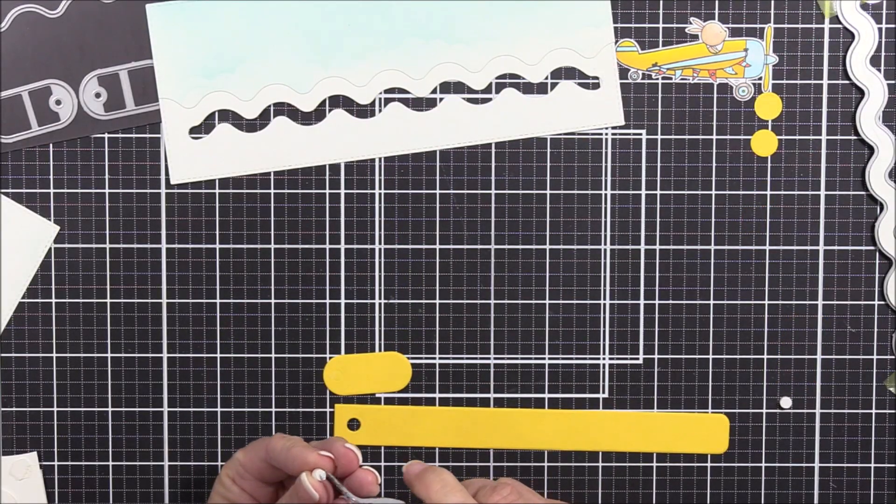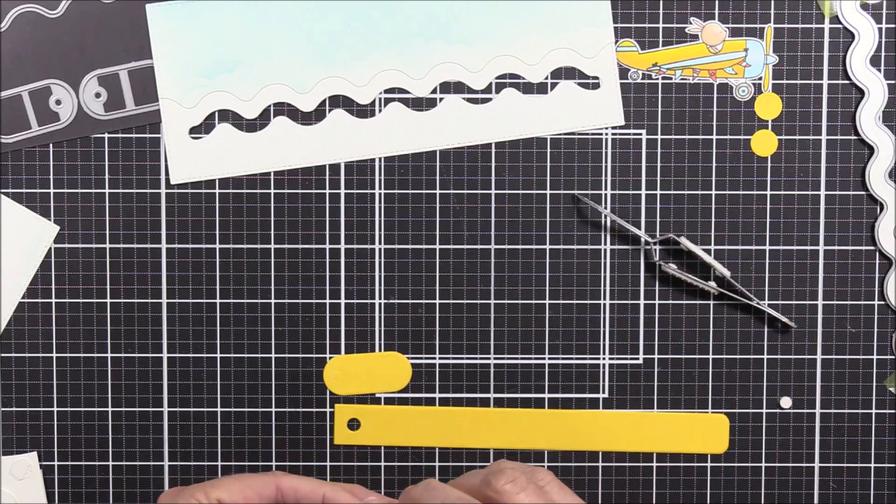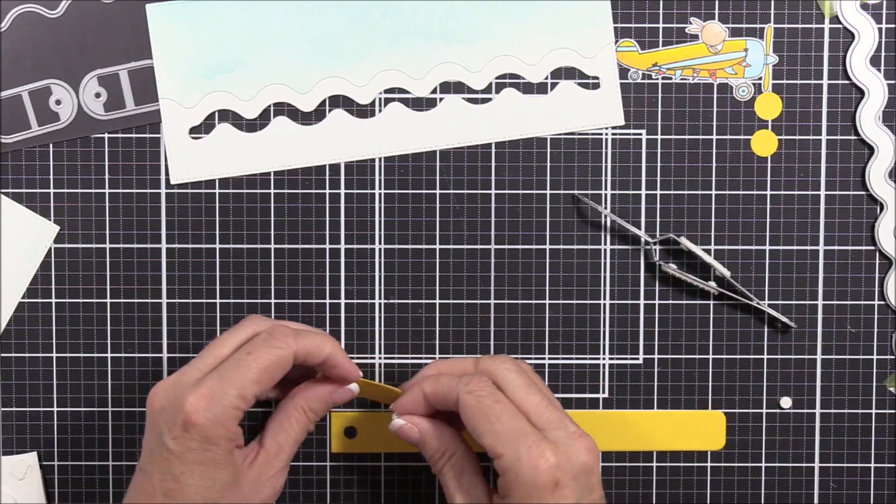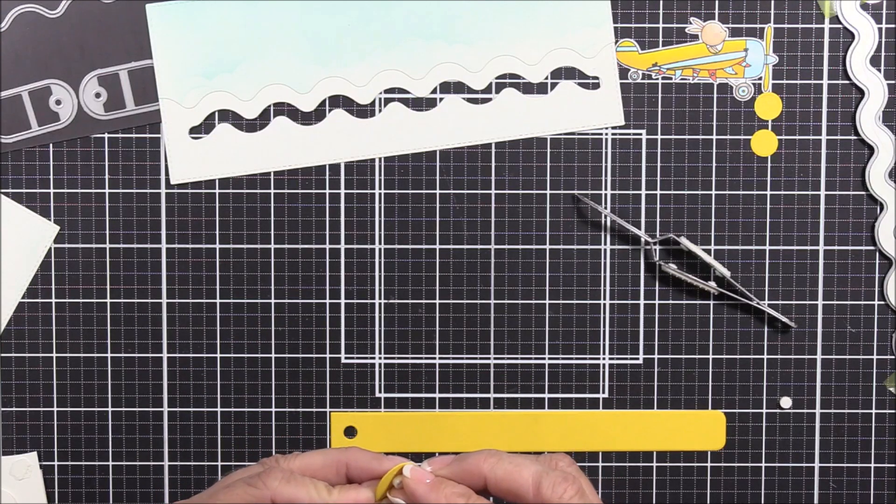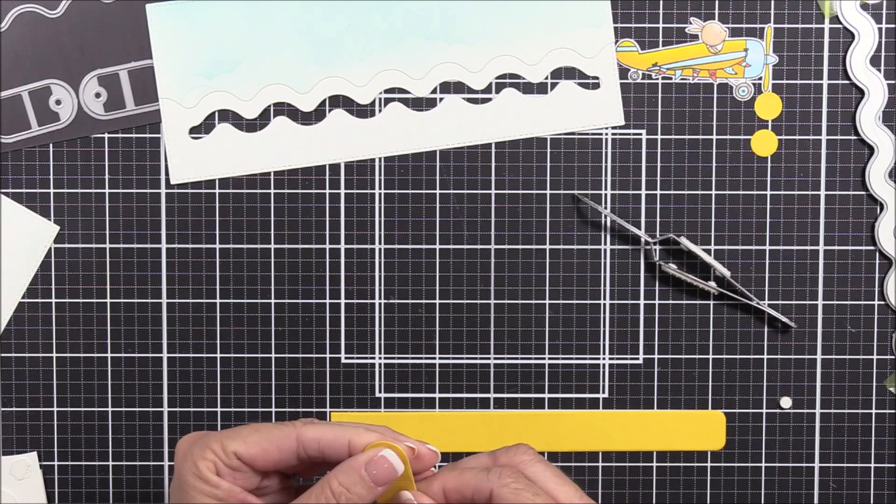Next, I adhered some double-sided tape to both sides of two spin and slide elements. I'm removing the liner paper from one end of the element, and I'll adhere that to the embossed circle on the assembled tab.